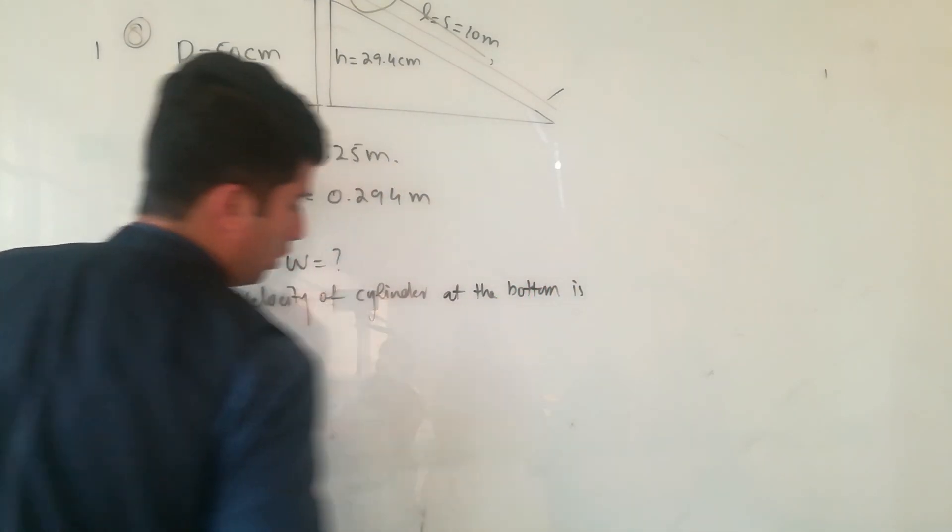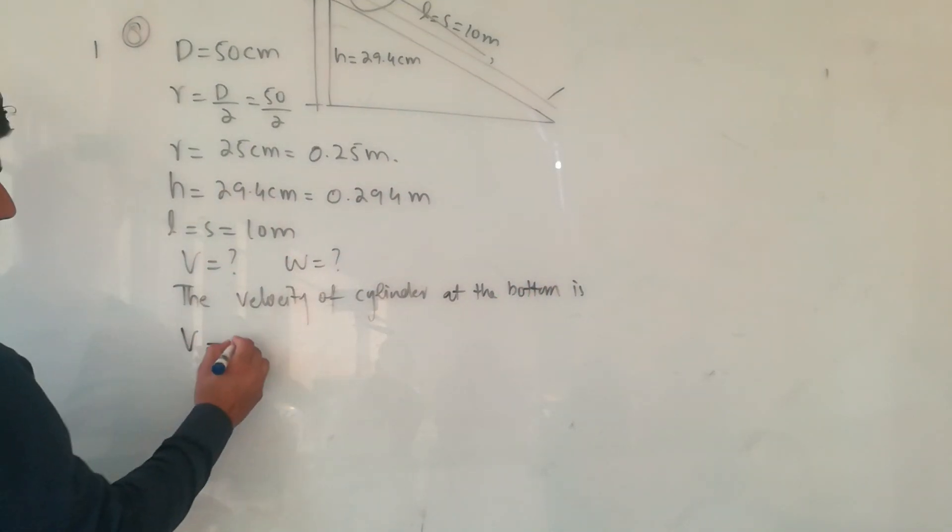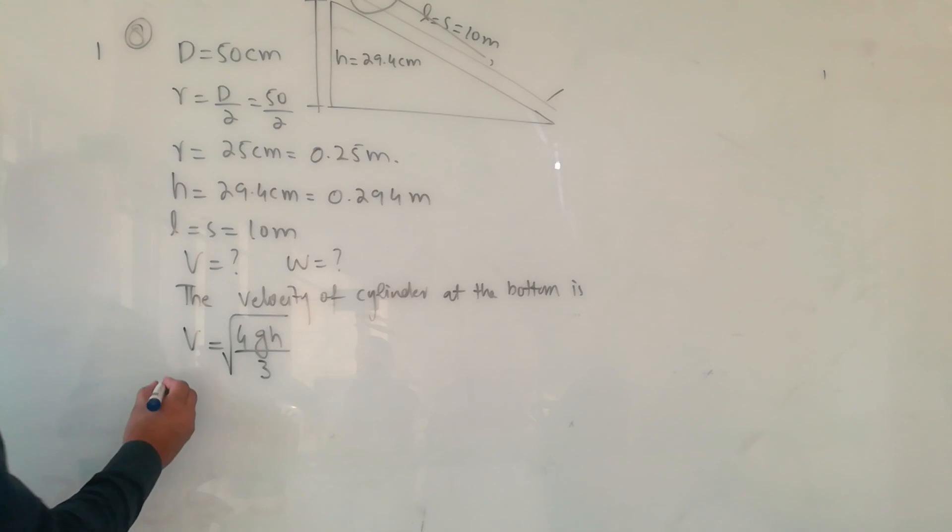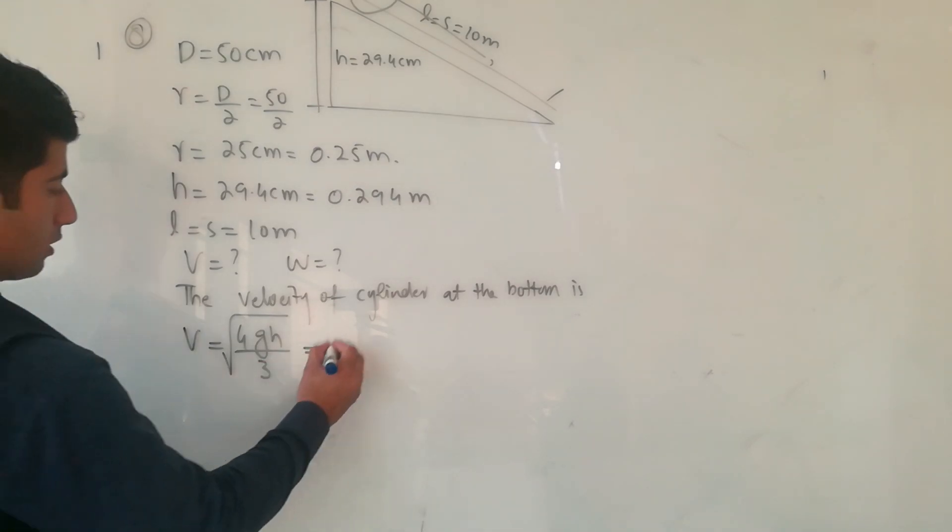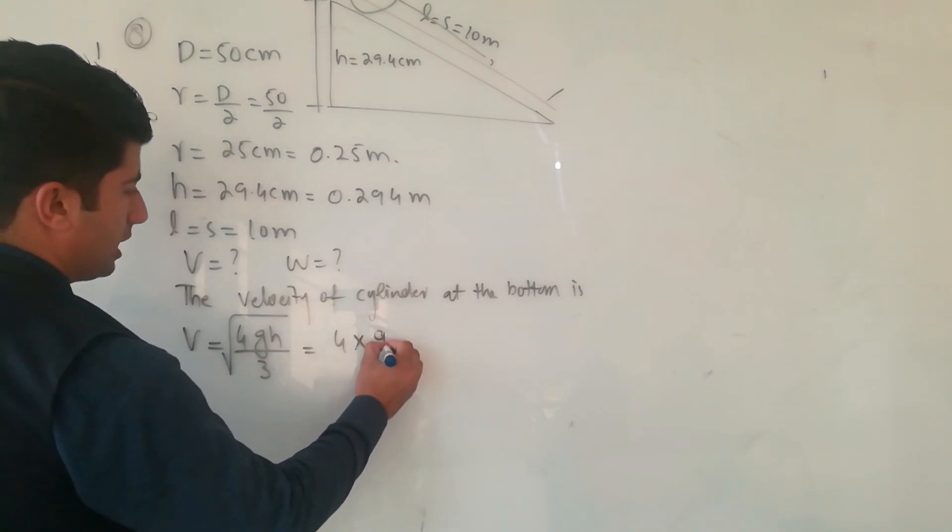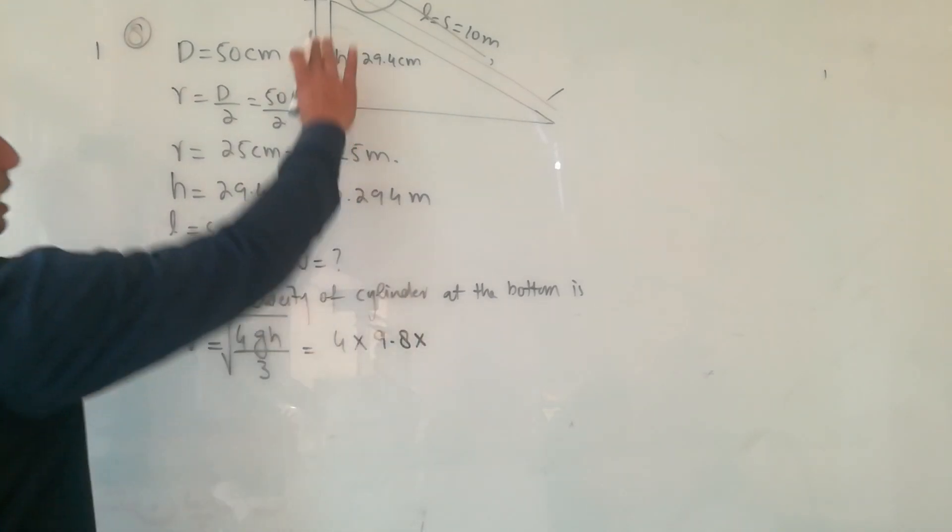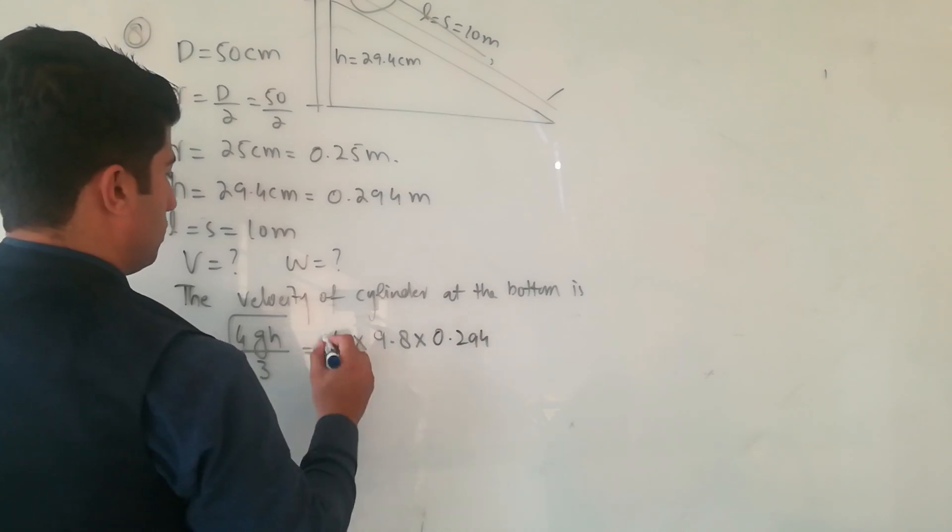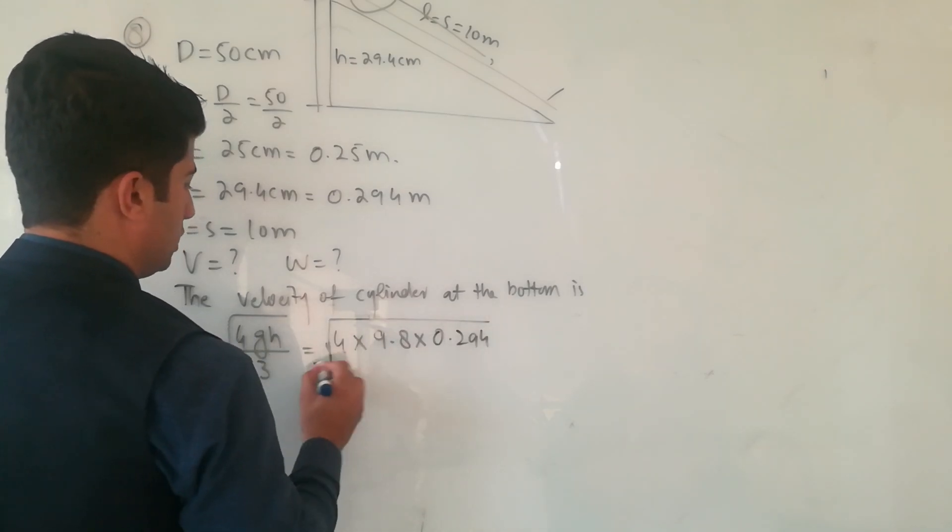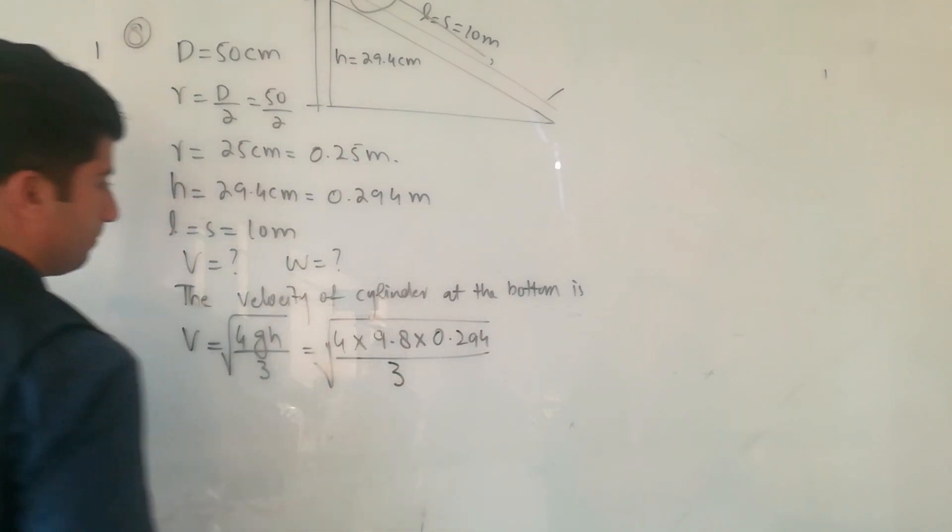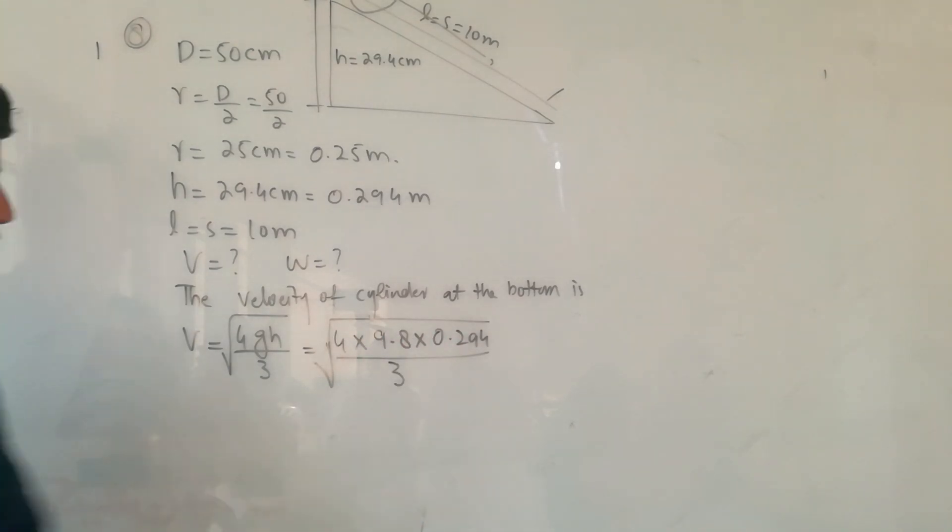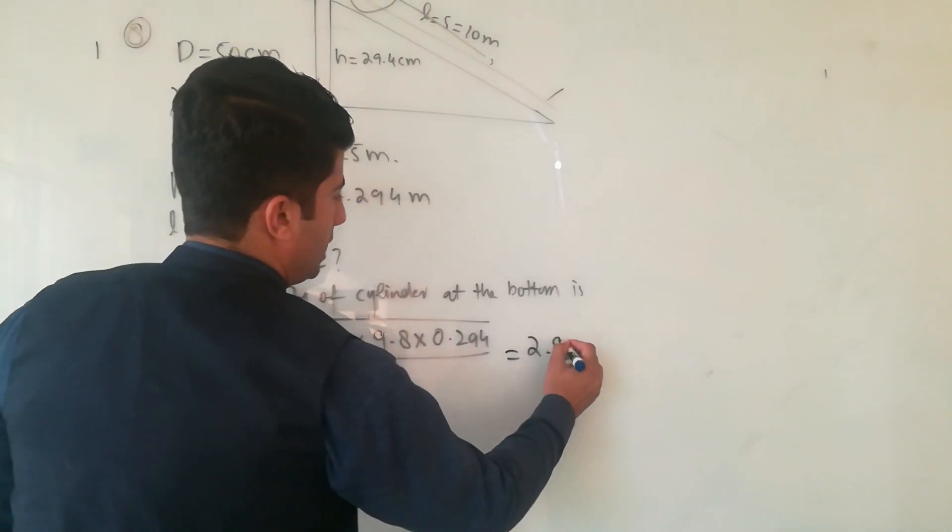The linear speed at the bottom is given by the square root of 4gh divided by 3. The linear speed equals square root of 4 times g value, which is 9.8, times height, which is 0.294, all under the root divided by 3. Using a calculator, multiply and divide by 3, you will get 2.96 meter per second.